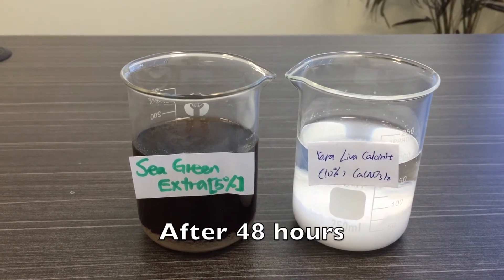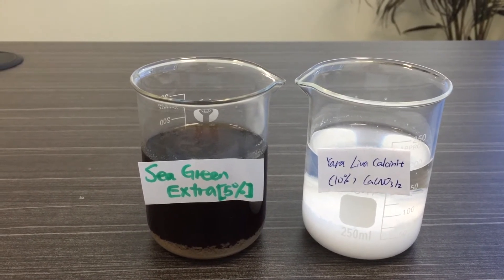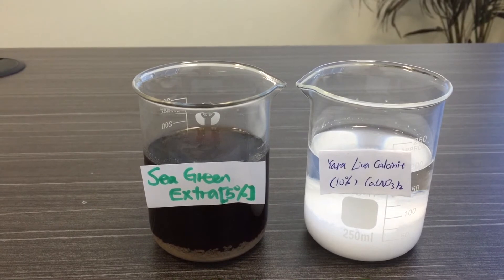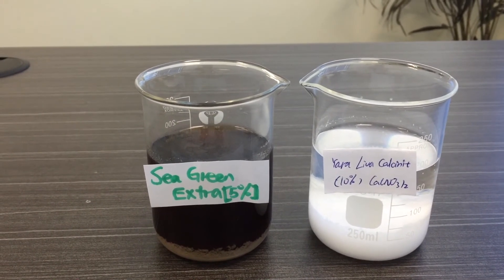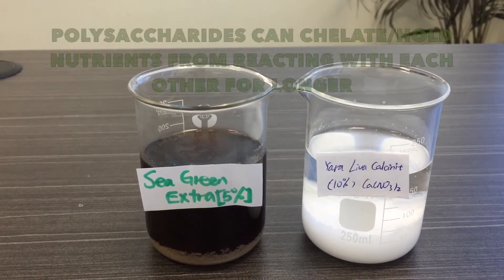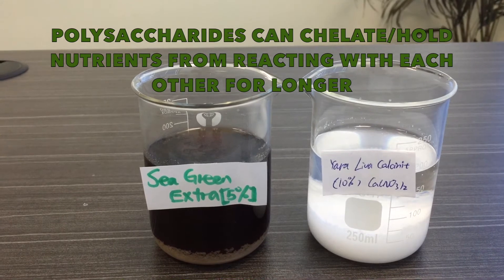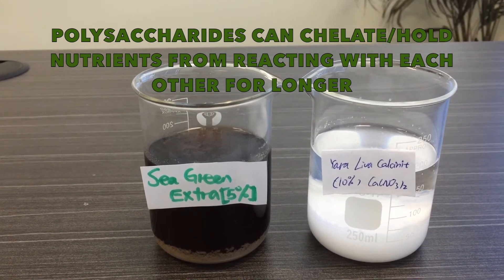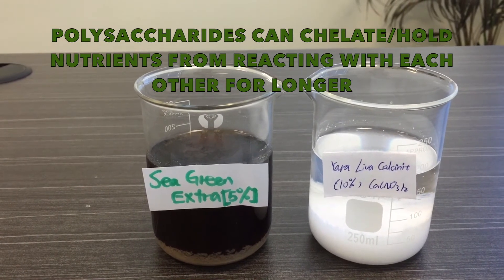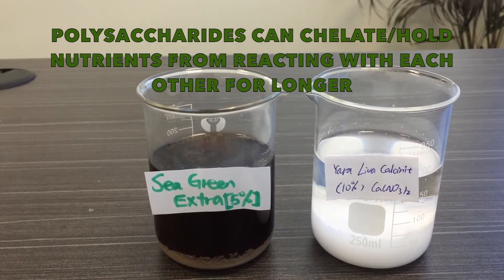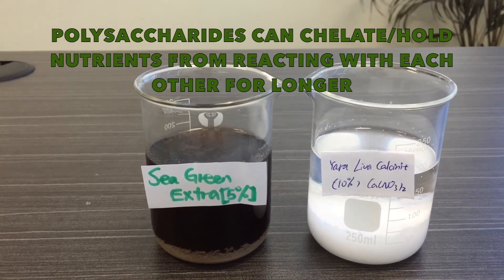This is how the two beakers look after 48 hours. As you can see, the one on the right has got a lot of precipitation, whereas the one chelated by Sea Green only has a little bit. This further demonstrates that Sea Green Extract, with its active ingredient polysaccharide, is able to chelate cations in the soil over an extended period of time, making more nutrients available to your plants. Thank you for watching.